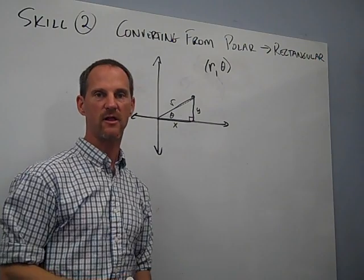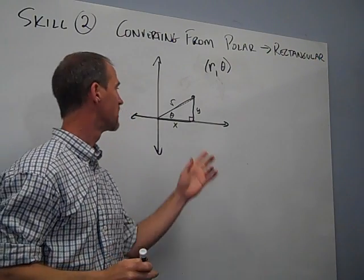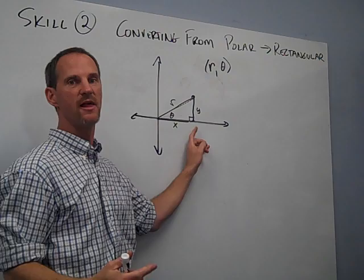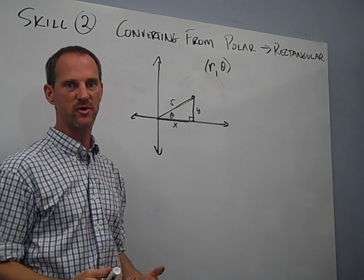And that, of course, is a right angle. And that's a key to the whole thing because with that right angle, we get a right triangle. And with the right triangle, we can use our trig ratios.